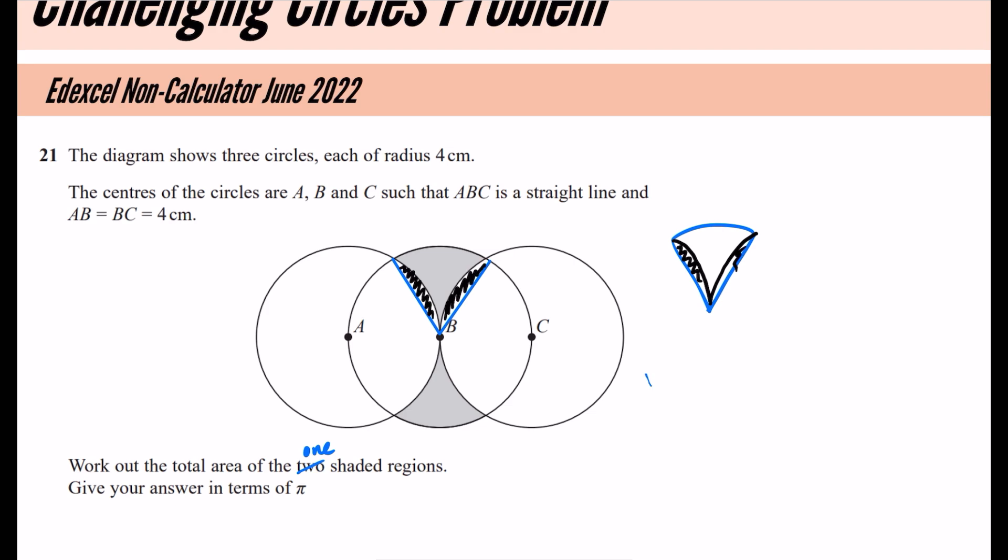So first of all, let's have a look at the sector area. Now, the sector area should be pretty intuitive about how much of a circle that this is. Even looking at the diagram, because we know, and maybe I'll draw some extra lines on, because we know that all of these bits are some radius or radii here, these are equilateral triangles. So because it's an equilateral triangle, that must mean that all of these angles are 60 degrees.